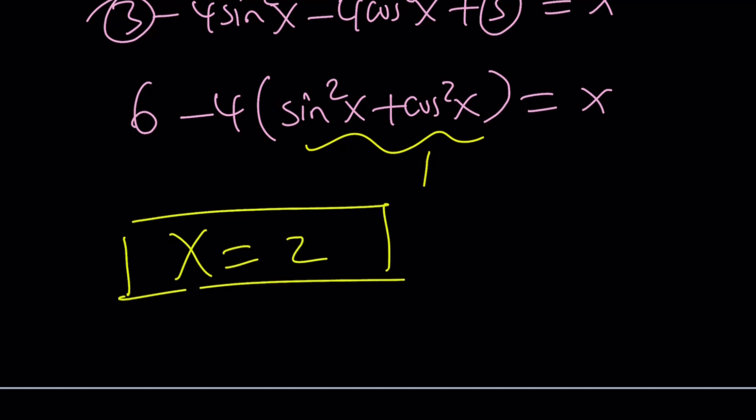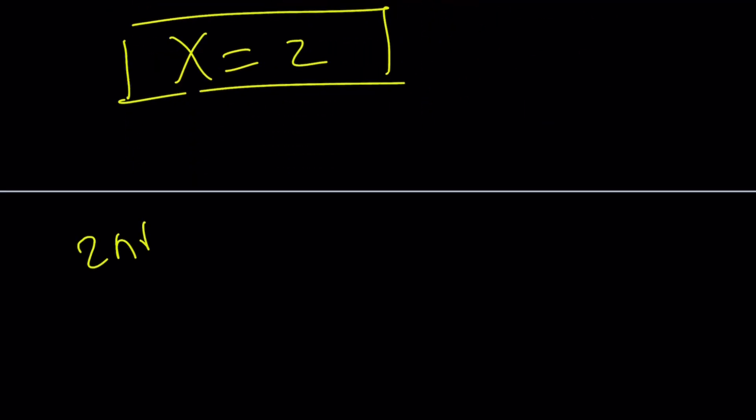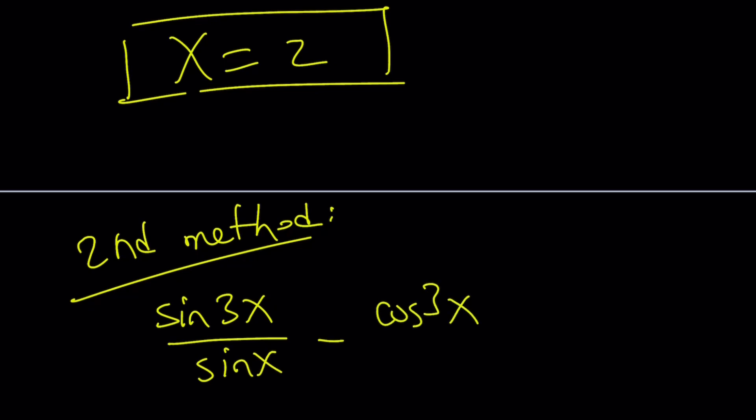That kind of looks interesting, right? Okay, let's go ahead and take a look at the second method. I hope you like the second method as well. Maybe even better. So, here's my equation. Sin(3x)/sin(x) - cos(3x)/cos(x) = x.